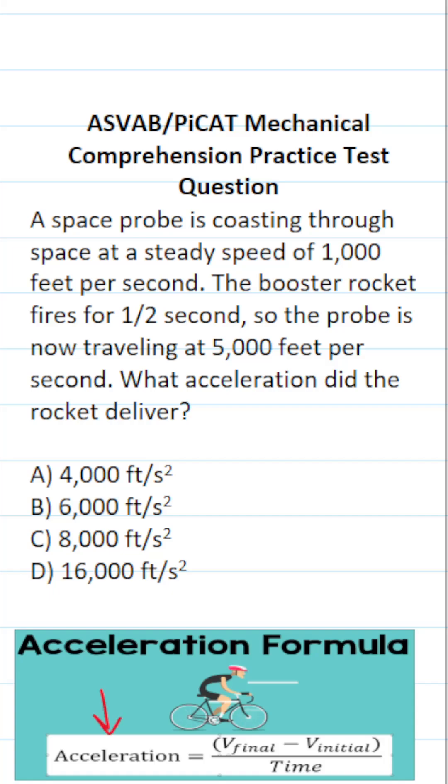To answer this one, we have to know how to calculate acceleration. Thankfully enough, that's pretty easy. A for acceleration is going to be equal to the final velocity, which I'm going to call V of F, minus the initial velocity, which I'm going to call V of O, divided by T for time.